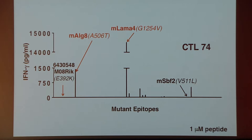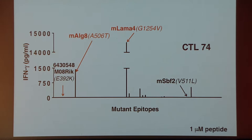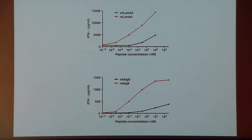We then made 8 amino acid peptides that included the mutations of all 61 potential epitopes, incubated each peptide with irradiated splenocytes as feeders and the CTL-74 T-cell line. Our prediction hit it right on the button — the only two peptides that really substantially activated CTL-74 were the mutant form of ALG8 and the mutant form of Lama-4. Looking at the Y-axis, there's a big difference suggesting that Lama-4 is actually immunodominant of the two.